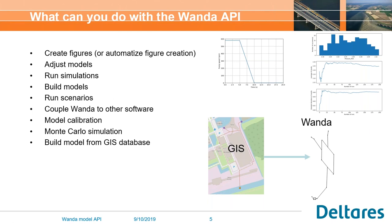You can change models and do parameter studies. You can also think about coupling Wanda to other software — get results from the other software, run your simulations, and put the results back. Basically, you'll be able to create your own user interface. You can also do model calibration: if you've done measurements, you can make a script to easily run several simulations, and based on the results, create new simulations to calibrate your model. Monte Carlo simulations are also possible, and we already made some example scripts. You can see here the distribution of pressure for a large number of simulations, giving insight into the robustness of your design.